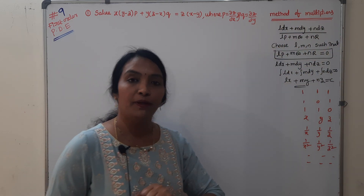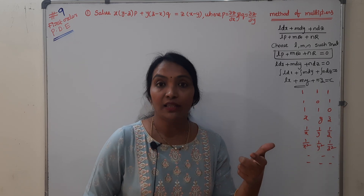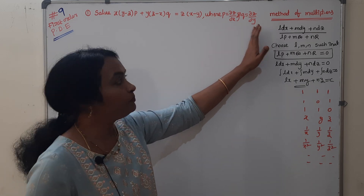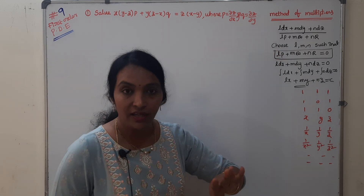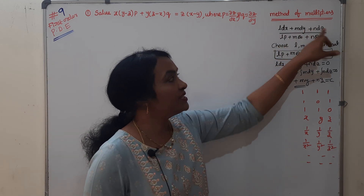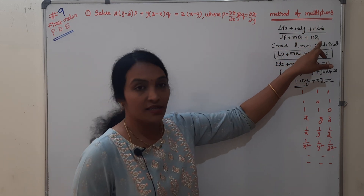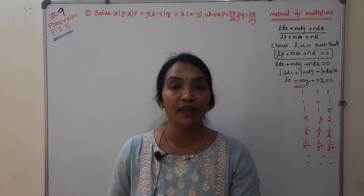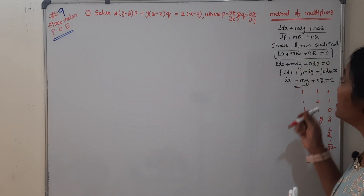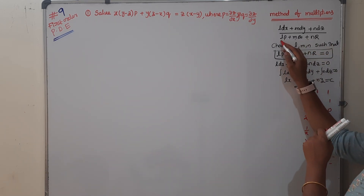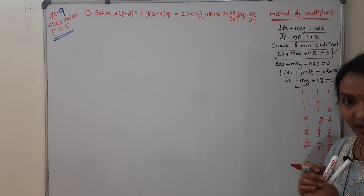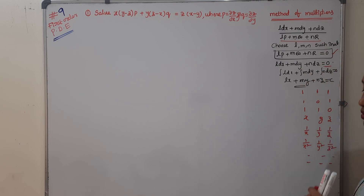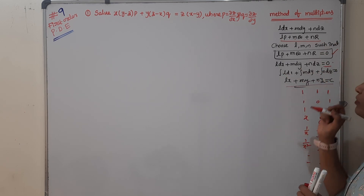How do you use the method of multipliers? If we use the auxiliary method and it is not possible, then go for the method of multipliers. The method of multipliers is: ldx + mdy + ndz divided by lP + mQ + nR. Here, l, m, n are the multipliers. After applying this formula, the denominator term is zero. If ldx + mdy + ndz equals zero, then you will get the solution.